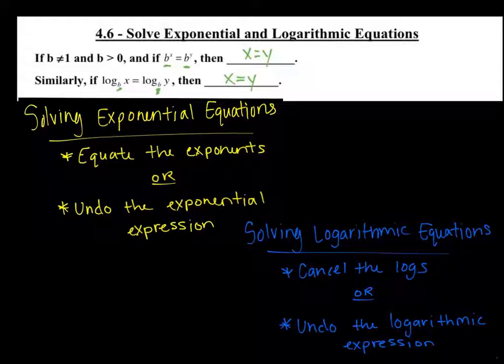So it says as long as b doesn't equal 1 and b is greater than 0, if you have two exponential expressions on each side of your equal sign, then if your bases are the same, b to the x power equals b to the y power, then x has to equal y because they have the same base and your equal sign tells you that they're equal.